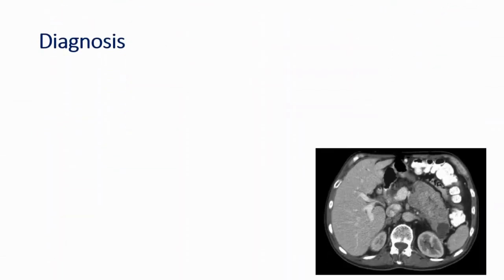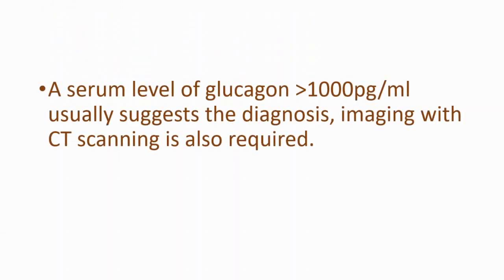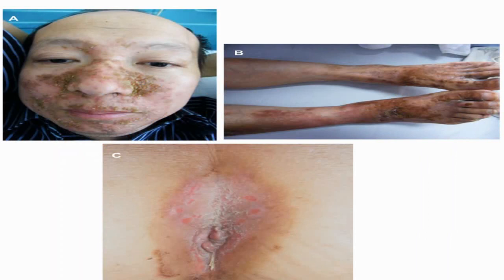For diagnosis, we can look at the serum glucagon level, which is the most important test, along with CT and endoscopic ultrasonography to localize it. A serum glucagon level of more than 1,000 picograms usually suggests the diagnosis. We should also look at the CT scan, and this is an example of clinical presentation — you can see crusty rashes.